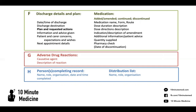Then any patient and carer concerns, expectations, and wishes. So if the patient has recently signed a DNACPR, you want to mention it and say that during the admission there was a discussion around CPR and what the patient would like in the long run, and that the patient has signed a respect form. Also include any next appointment details. If you don't always have the specific date and time, make sure you document that the patient will be contacted directly by the team.